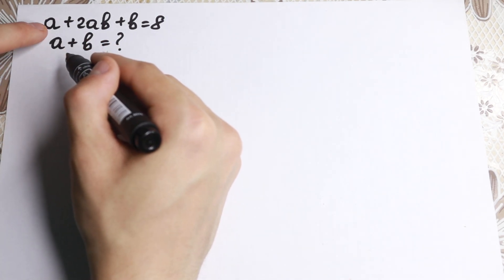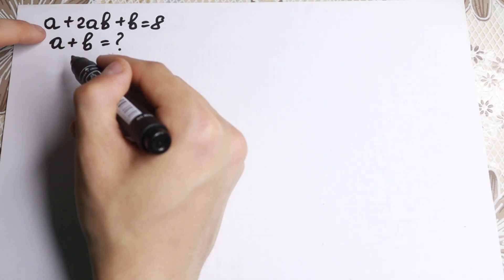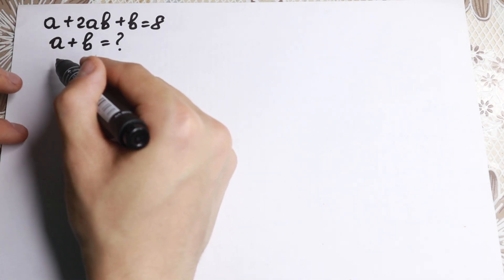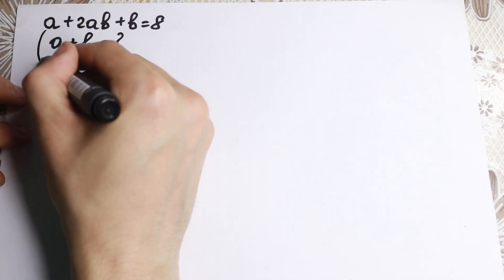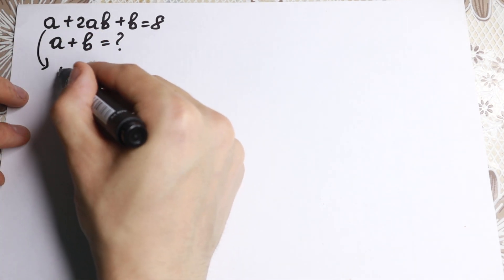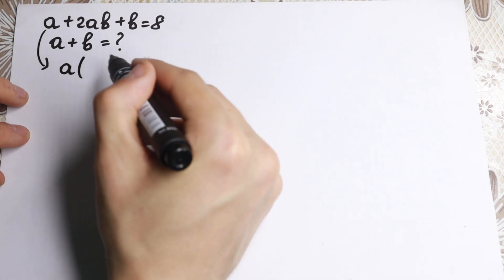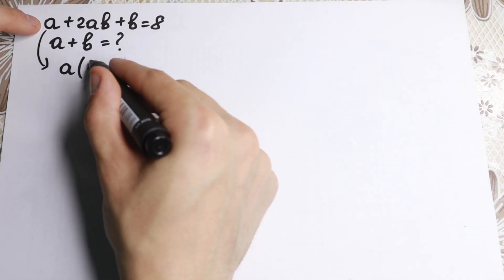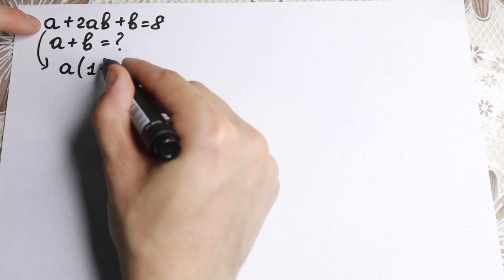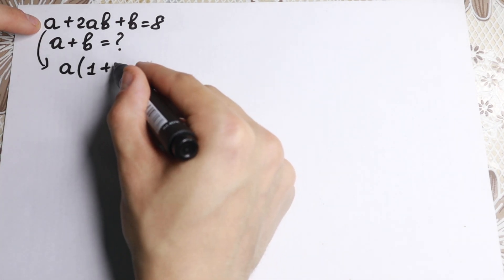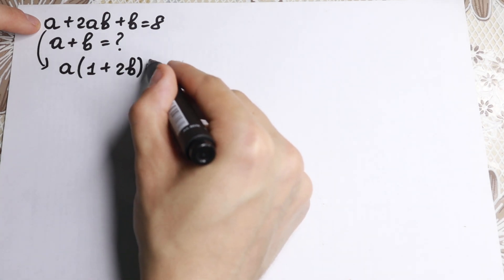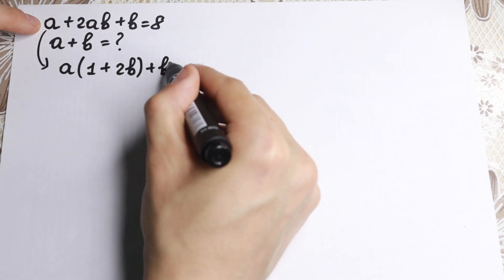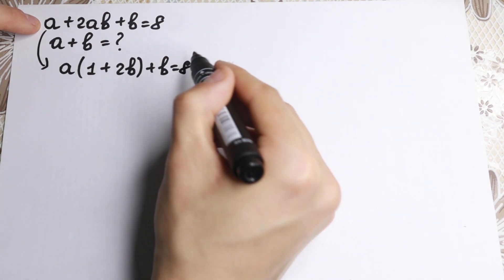We have this expression. Let's factor from these two expressions — a and plus 2ab. Let's factor out a. If we factor out a, as a result in parentheses we will have 1 plus 2b. So we have a(1 plus 2b) plus b equal to 8.